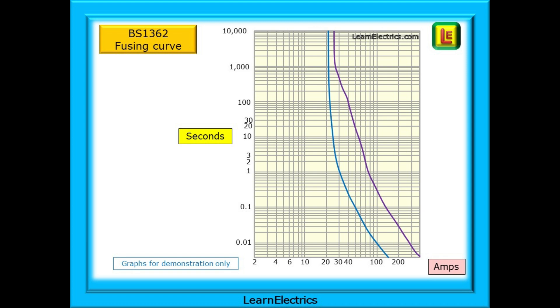This is a fusing curve for a BS-1362 plug-top fuse and will serve as well to demonstrate why things happen as they do. Graphs for other fuse types will be similar, but not quite the same. Along the bottom is the amps scale. How many amps are flowing through the fuse, either in normal use or when there's a fault. The left-hand side of the graph shows the time that it takes for the fuse to trip or blow with that amount of current flowing. We can trace a line up the graph from the amps line and where it meets the fusing curves, shown here in blue and purple, we can read across to the left-hand side and find the seconds taken to operate or blow.